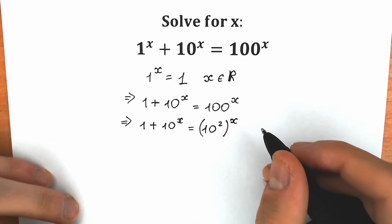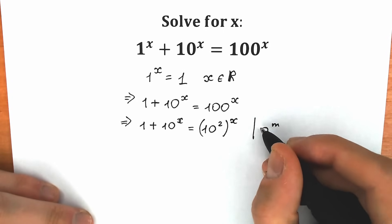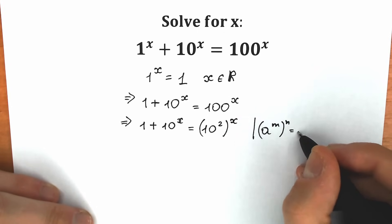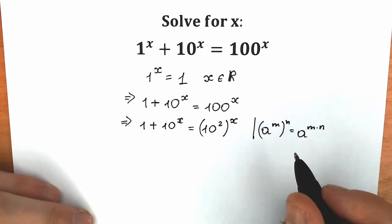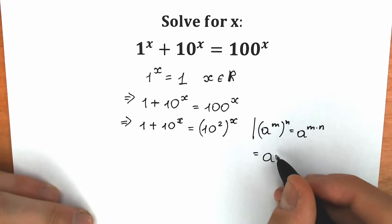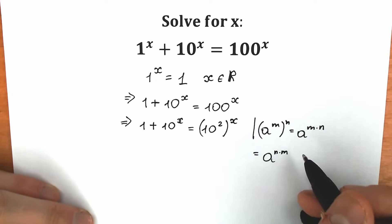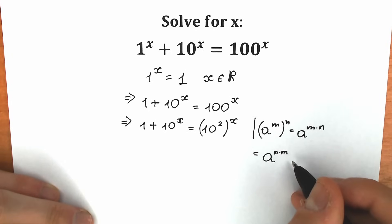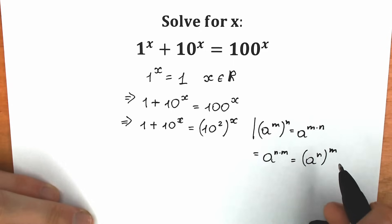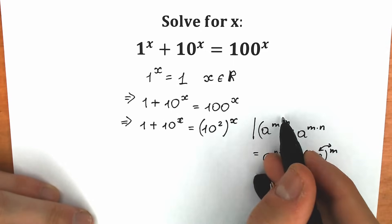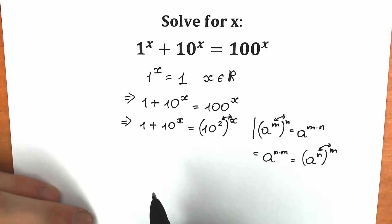It's really great to know about the rule of interchange — a basic power rule. When we have a to the power m raised to the power n, we can write it as a to the power m times n. In the same way, we can write it as a to the power n raised to the power m — we can swap these positions. So let's swap these 2 and x.